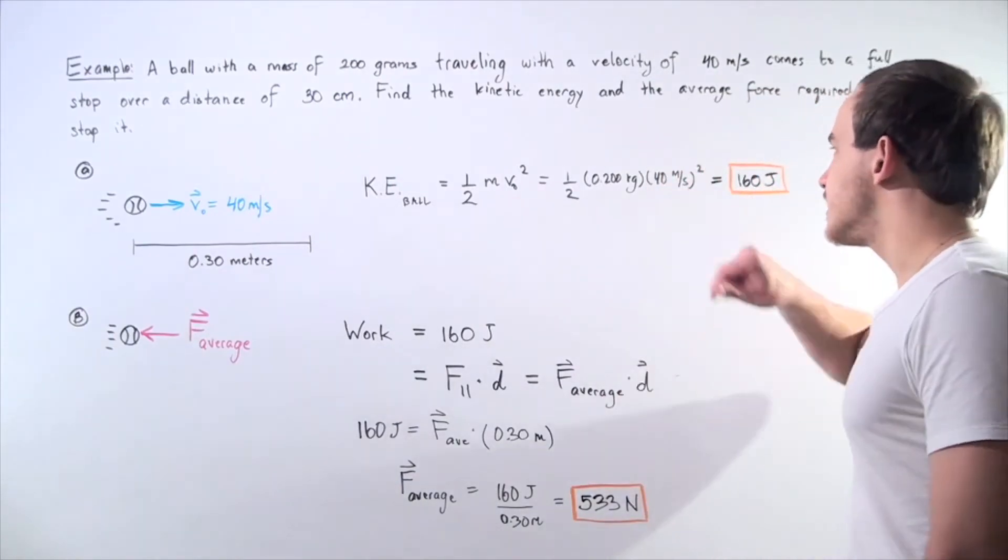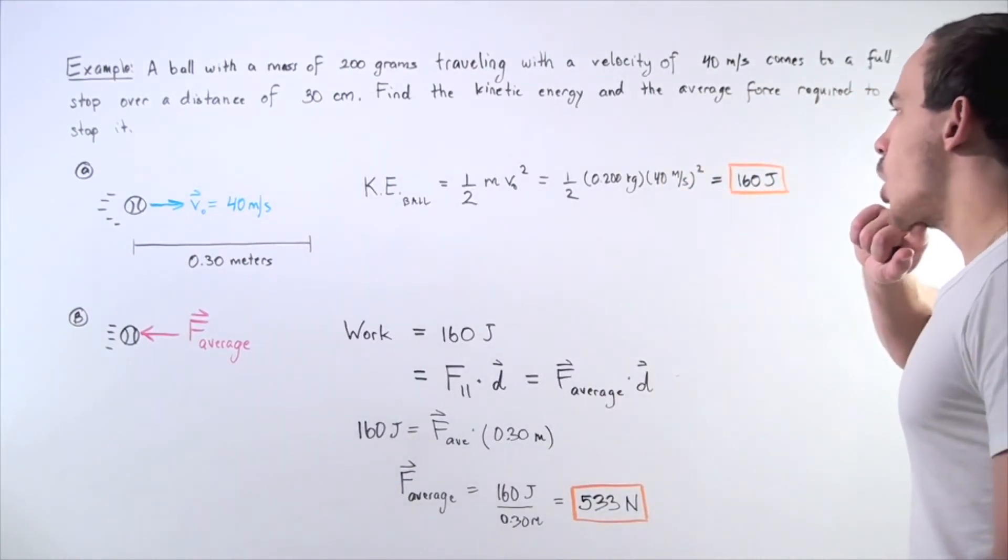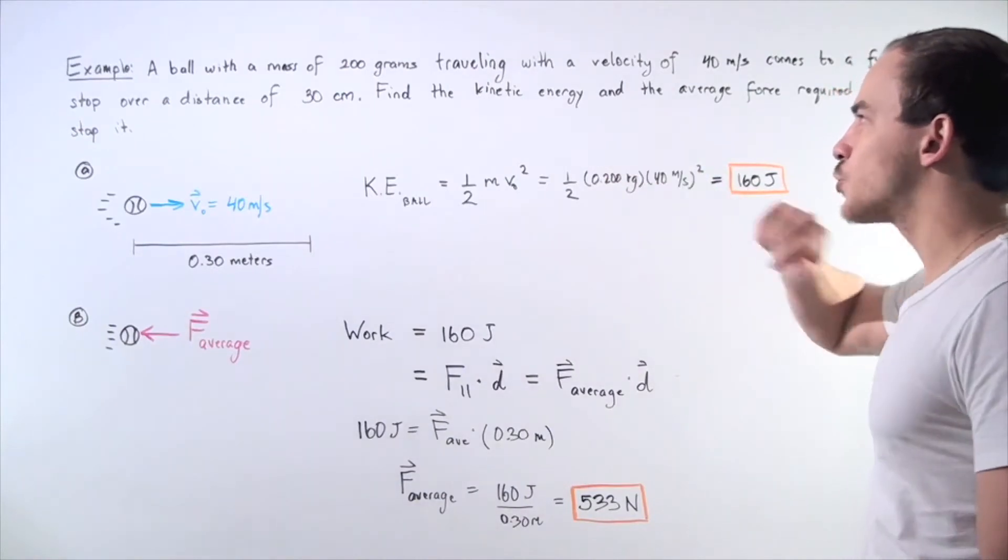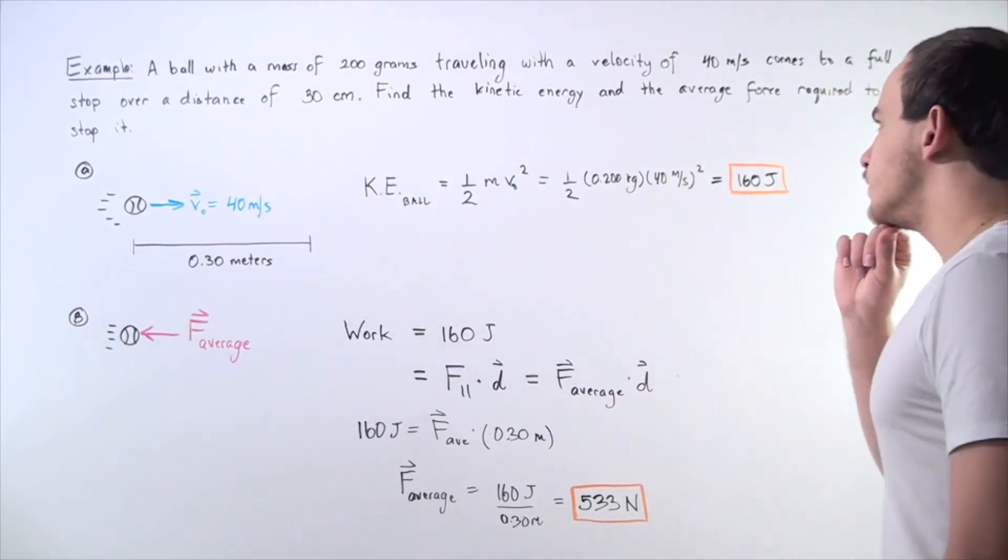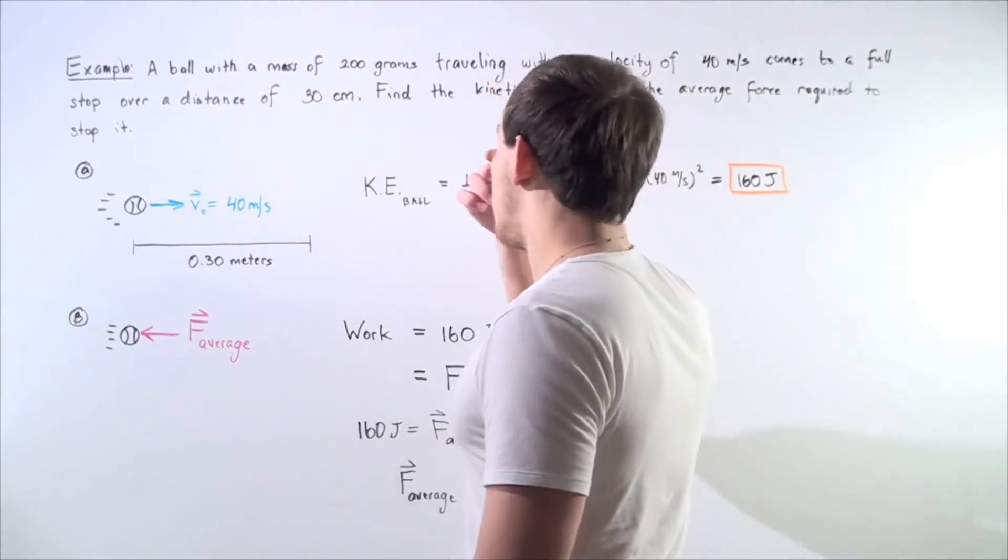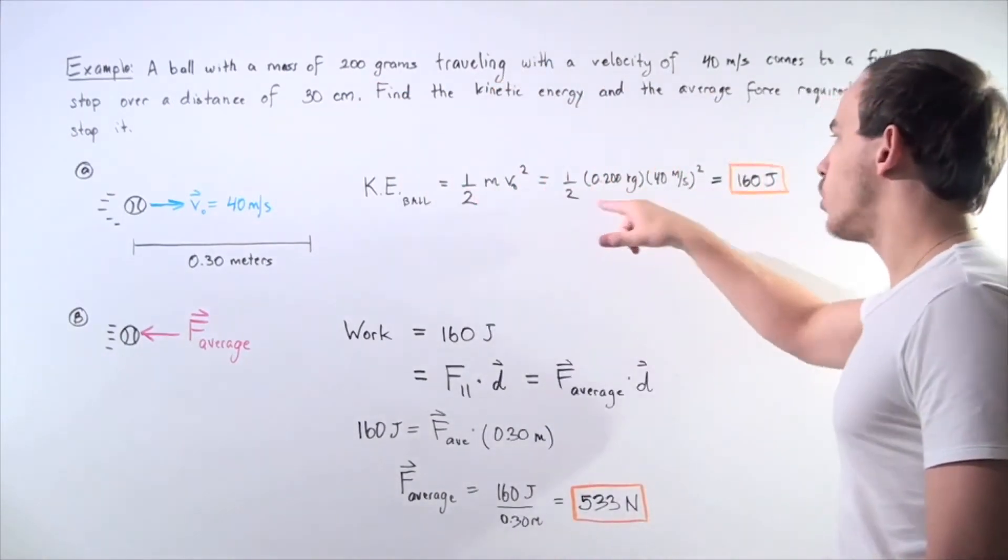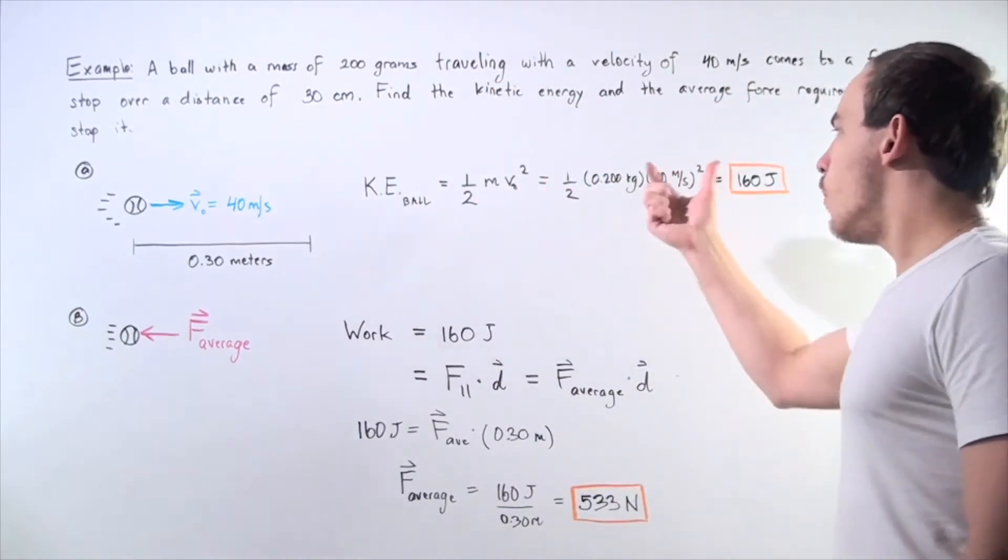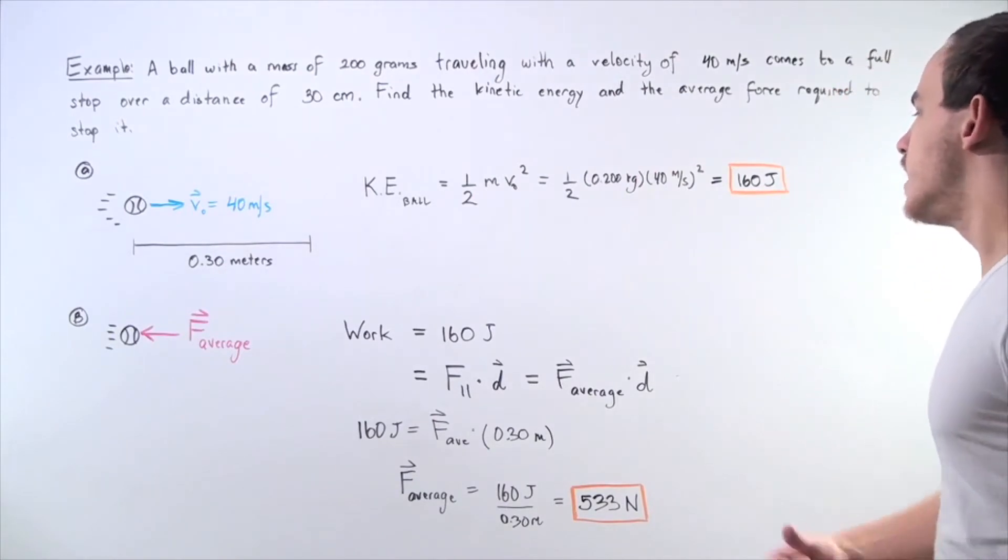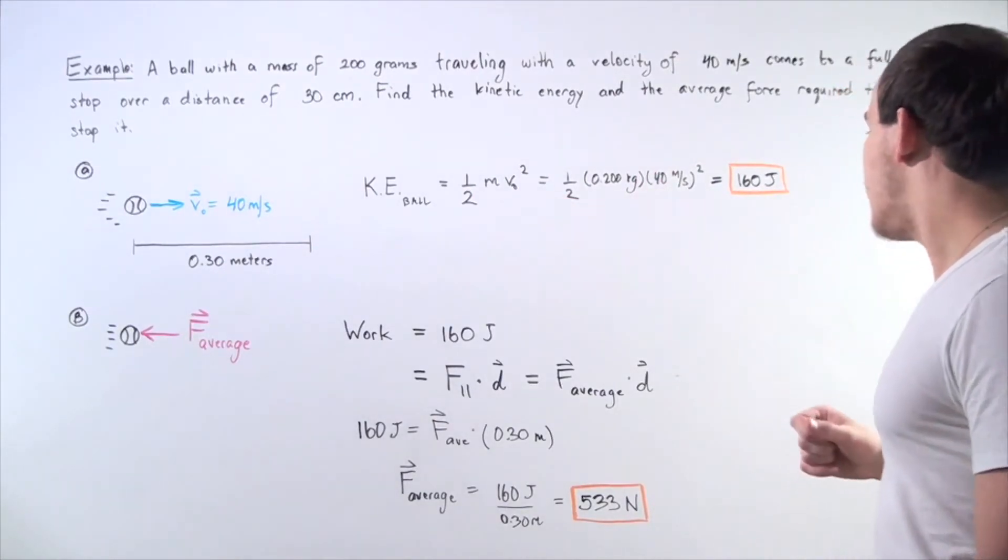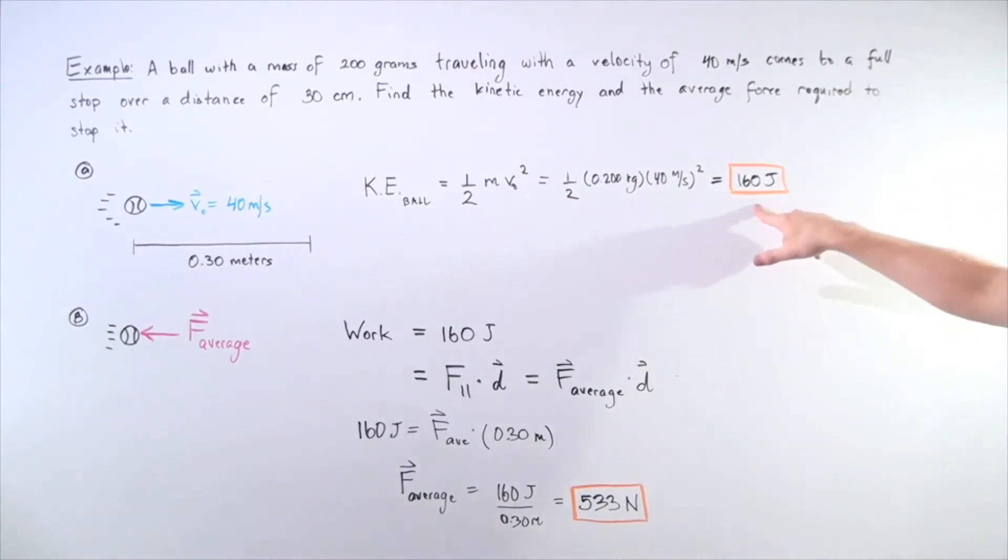We know what V is, it's 40 meters per second. We know what our mass is, it's 200 grams, but we want to convert it to kilograms. So divide 200 by 1000 and we get 0.2 kilograms. Multiply these two things out, multiply by one half, and we get 160 joules.